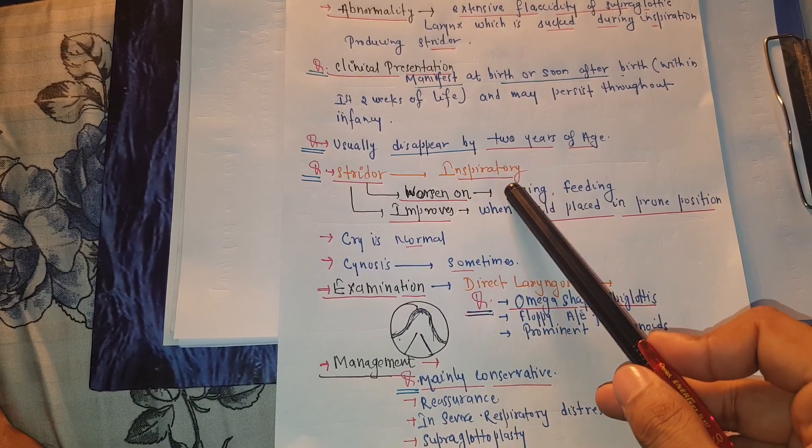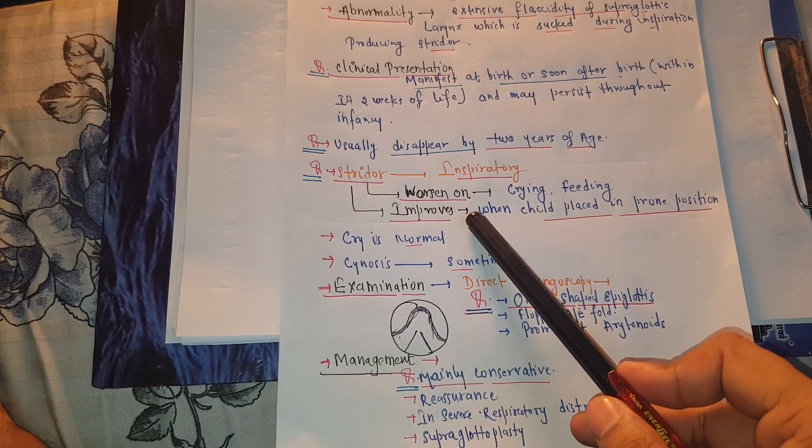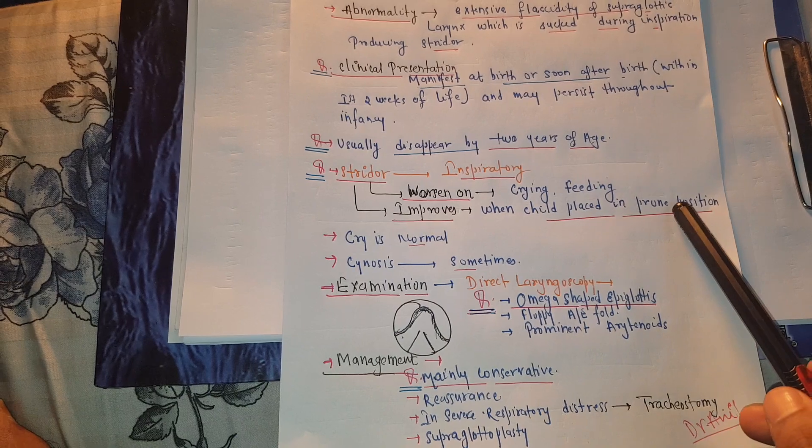The stridor is worse when the child is crying or feeding and improves when the patient is placed in the prone position.